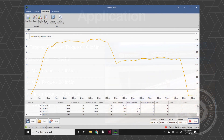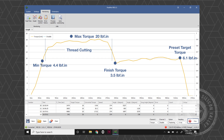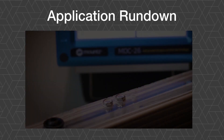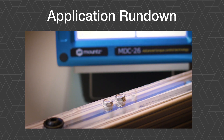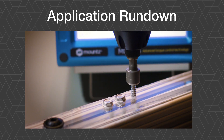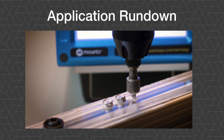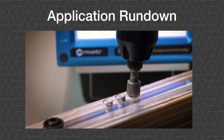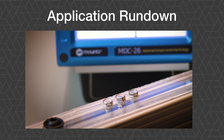If we add values to our different points, this is what we are seeing: our min torque at 4.4 inch pounds, our max torque at 20, the finishing torque at 3.5, and the preset set to 6.1. Here is the example of the rundown, and it is just that easy.